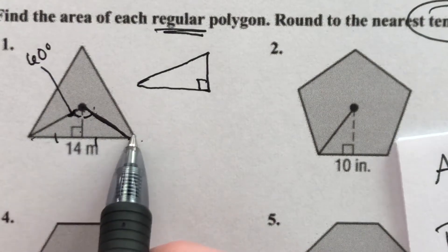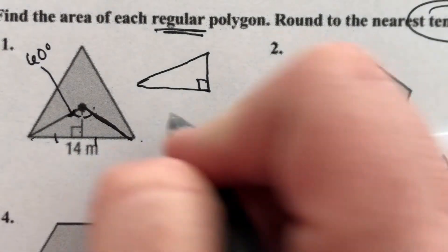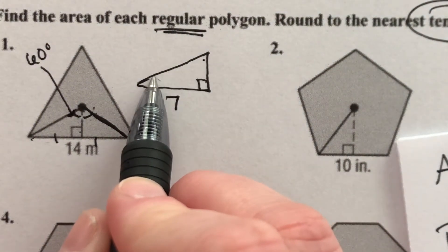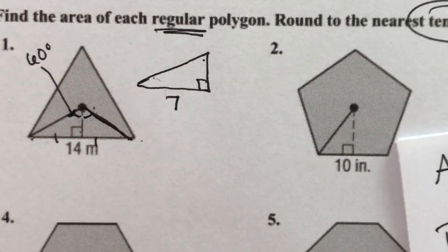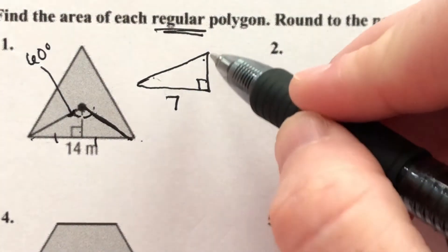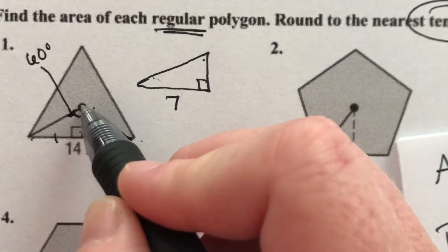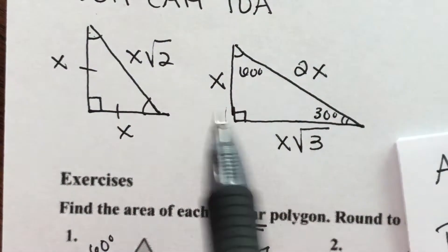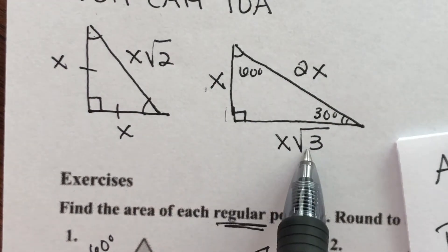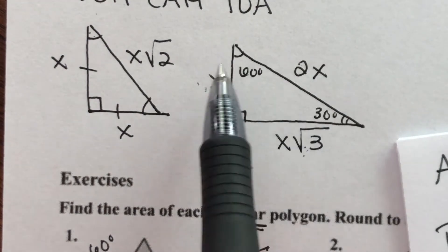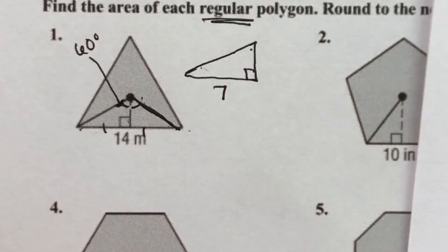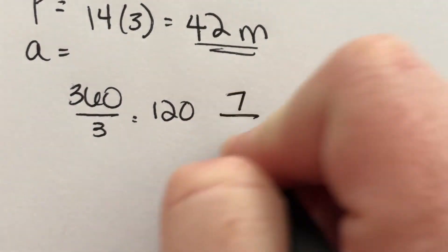The whole bottom side is 14, so half of that is 7. This angle is 60 degrees at the top, 30 degrees at the base, and the apothem is the long leg. To find the apothem: if the short leg times √3 equals the long leg, then I go backwards and divide by √3. So I need to divide 7 by the square root of 3 to get the apothem length.